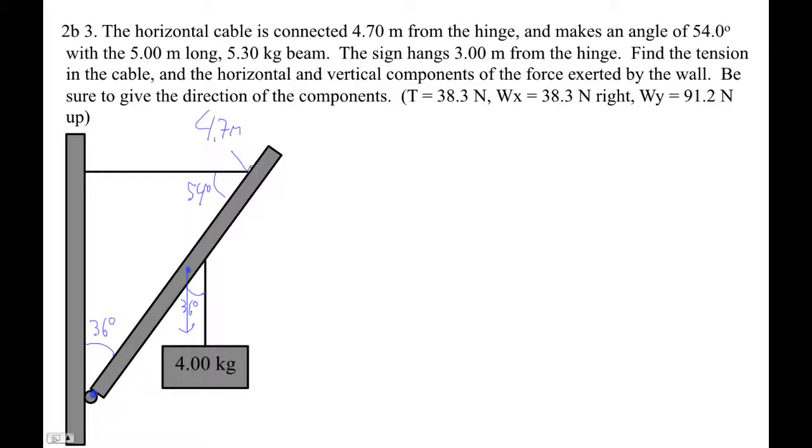So we've got, what do we have? We've got this force here, the tension acting this way. Right, we've got the tension acting totally to the left, right? We've got the force the wall exerts in the x direction, right? I'm going to call that Wx. We've got the force the wall exerts in the y direction acting on it, right? We've got the force of gravity on this thing. So what's the mass of the beam? 5.3 kilograms, right? So we've got 5.3 g.